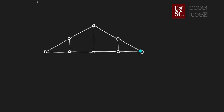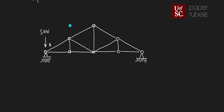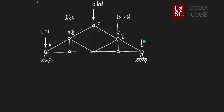We have another two more elements — this is a simple truss that does build a triangle. At one end we have a roller, and at the other end we have a pin. We have a 5 kN force at node A, 5 kN at B, 10 kN at C, 15 kN at D, and 5 kN at E. The remaining nodes are labeled F, G, and H.